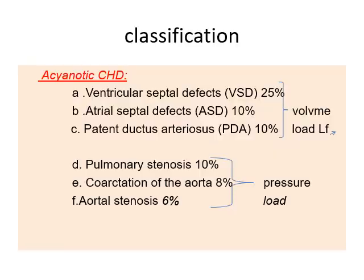Congenital heart disease is classified into two groups: those causing volume overload due to left-to-right shunt — including VSD (25%), ASD (10%), and patent ductus arteriosus (10%) — and those causing pressure overload due to pulmonary or systemic stenosis, such as pulmonary stenosis (10%), coarctation of aorta (8%), and aortic stenosis (6%).